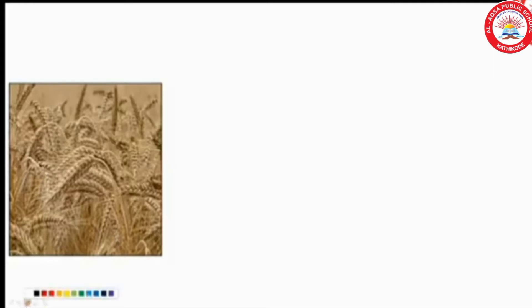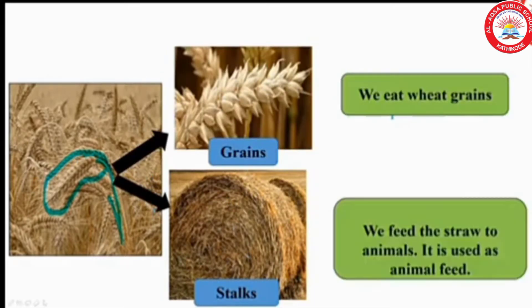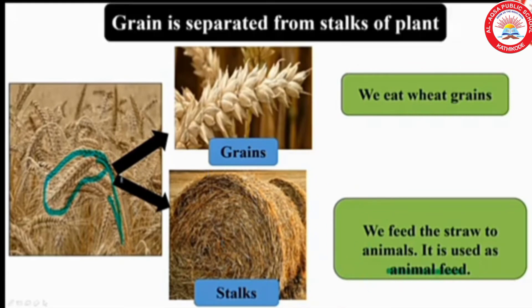The third example is separation of grains from the stock. These are dried grains that we separate from the dried stock — 'stock' means stem. Grains, such as wheat, we eat, while the straw from the stocks is used as animal feed. So both are useful components.